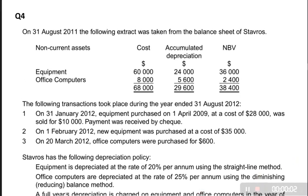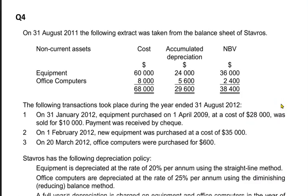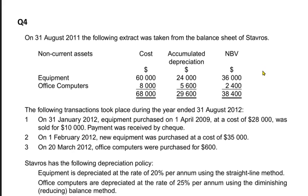We are discussing depreciation. We already learned the concepts underlying calculating depreciation using straight line and reducing balance methods, and now we are practicing more questions. We are working on the full year policy. There were two policies to calculate depreciation: one was full year policy and the other is month-wise policy. In a full year policy, we charge depreciation for the entire year no matter whether we have used the asset for the whole year or not.